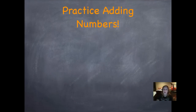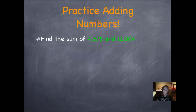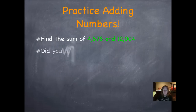Let's practice adding some numbers. Find the sum of 4,576 and 12,004. Remember, sum means the answer to an addition problem, so we're going to add those two numbers together. Go ahead and pause it, write it in your journal, and push play when you're ready. Did you write 16,580?